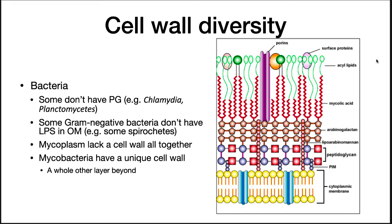While gram-positive and gram-negative cell wall structure is common in bacteria, there are, of course, exceptions. Some bacteria don't have peptidoglycan but do have other parts of the cell wall structure. Some gram-negatives, for example spirochetes, don't have LPS in their outer membrane. Mycoplasma lack a cell wall altogether. Finally, mycobacteria have a unique cell wall structure: while it somewhat resembles a gram-positive cell wall, there is an entire waxy layer beyond the peptidoglycan.